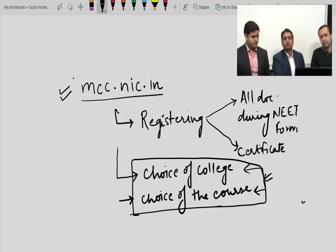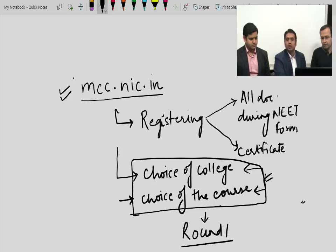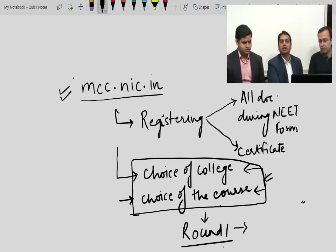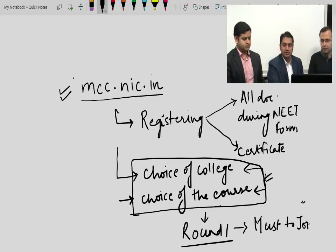As per the last Supreme Court judgment, there should be only two rounds this time — round one and round two — after which seats will be shifted to the state quota. Your filled choices will be considered for round one. Whatever seat is allotted to you in round one will be displayed on the MCC website. You must join that college; you cannot skip joining and wait for round two.